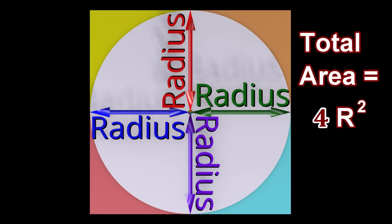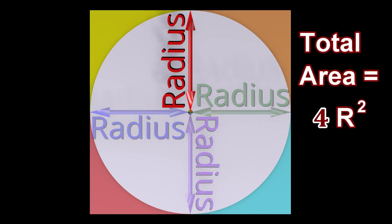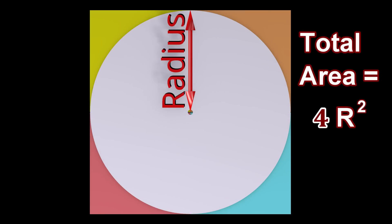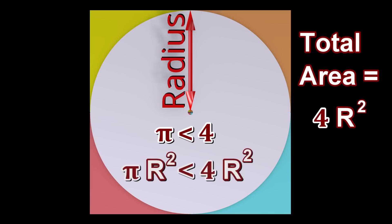The area of the circle is pi multiplied by the radius squared. The number pi is slightly less than four. So, pi multiplied by the radius squared is slightly less than four multiplied by the radius squared.